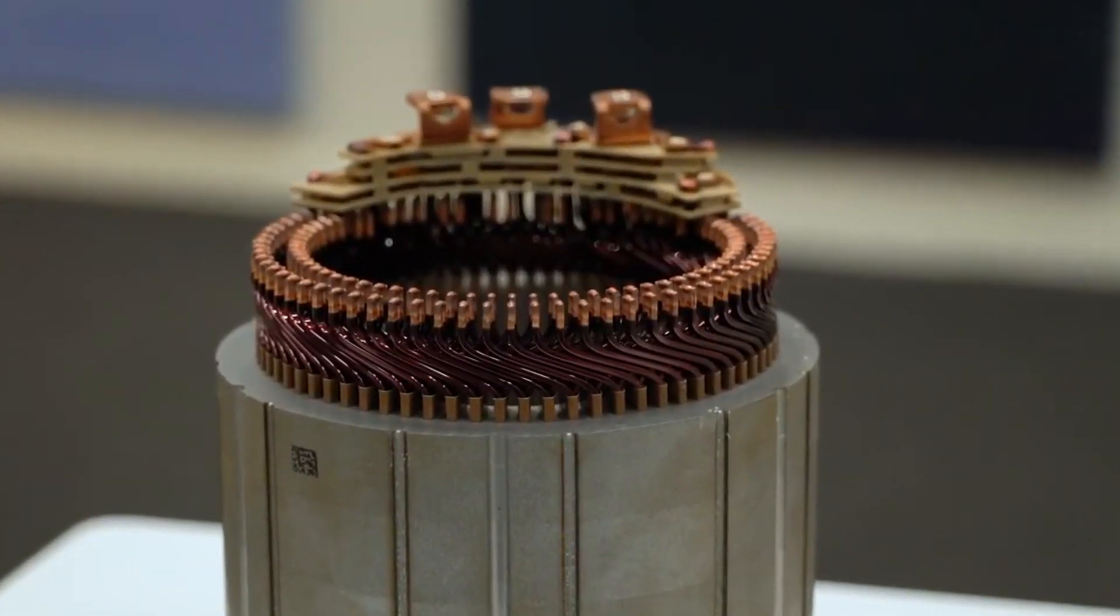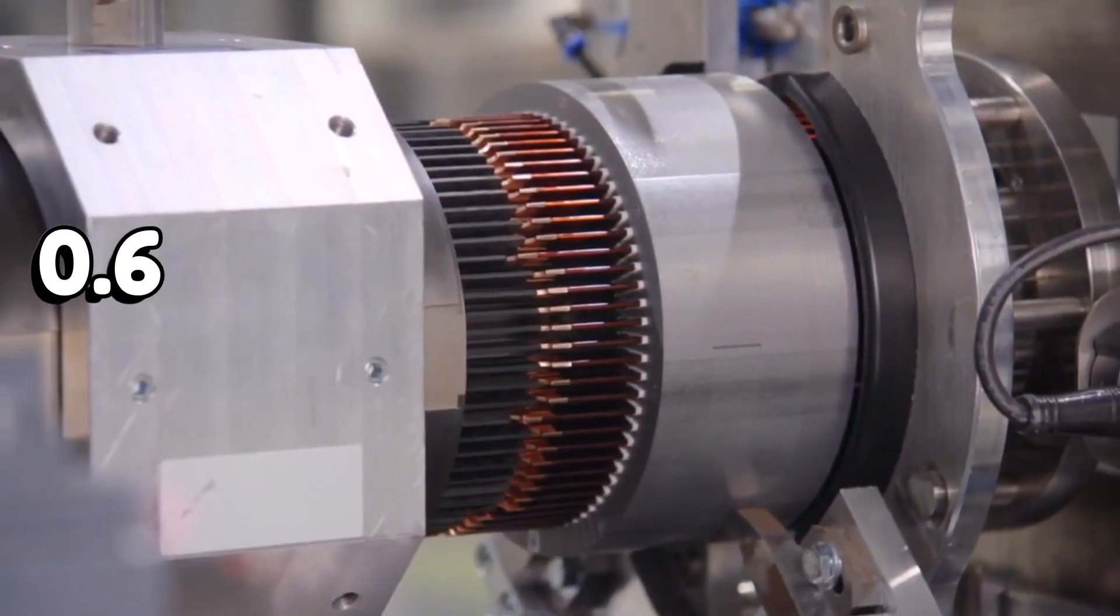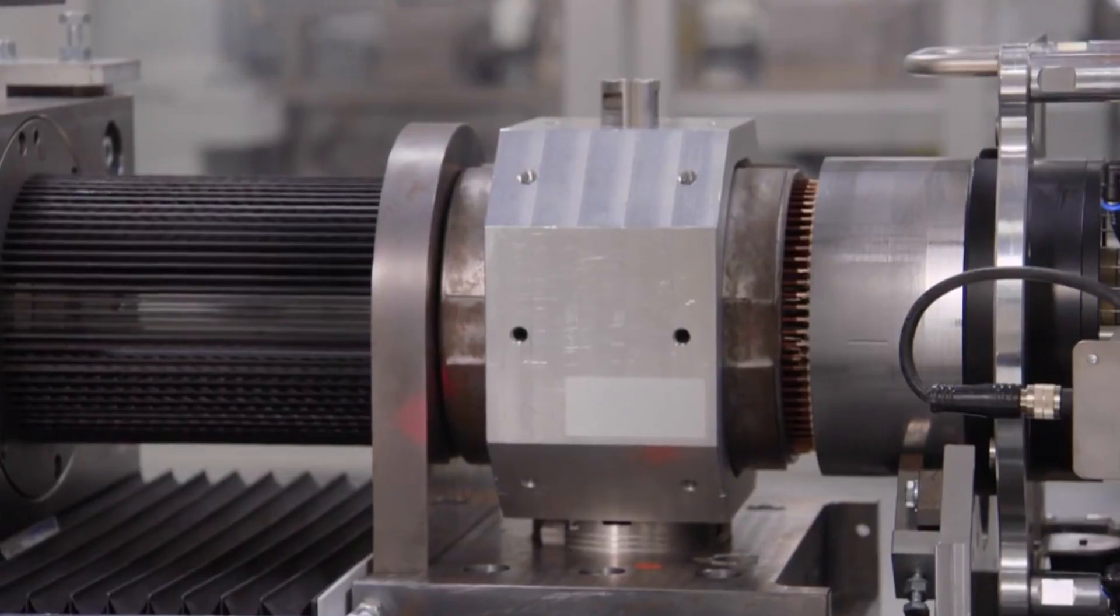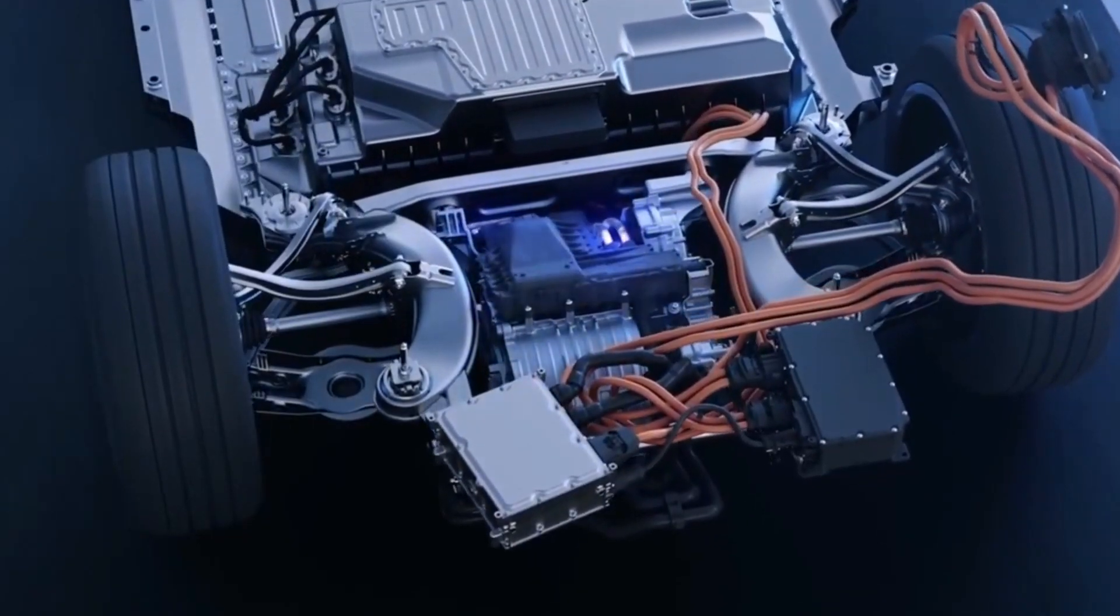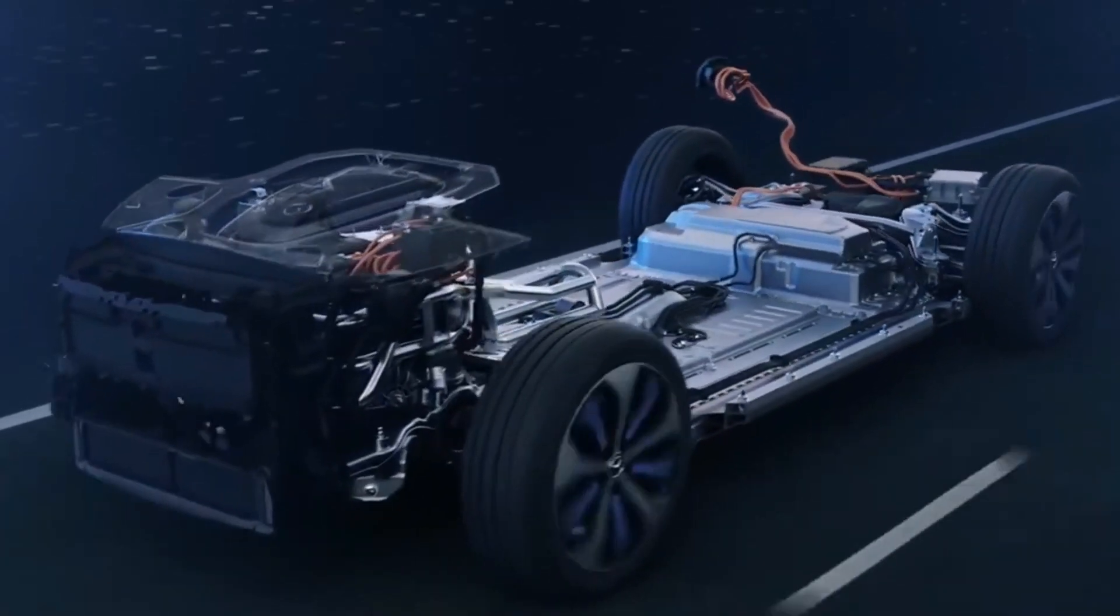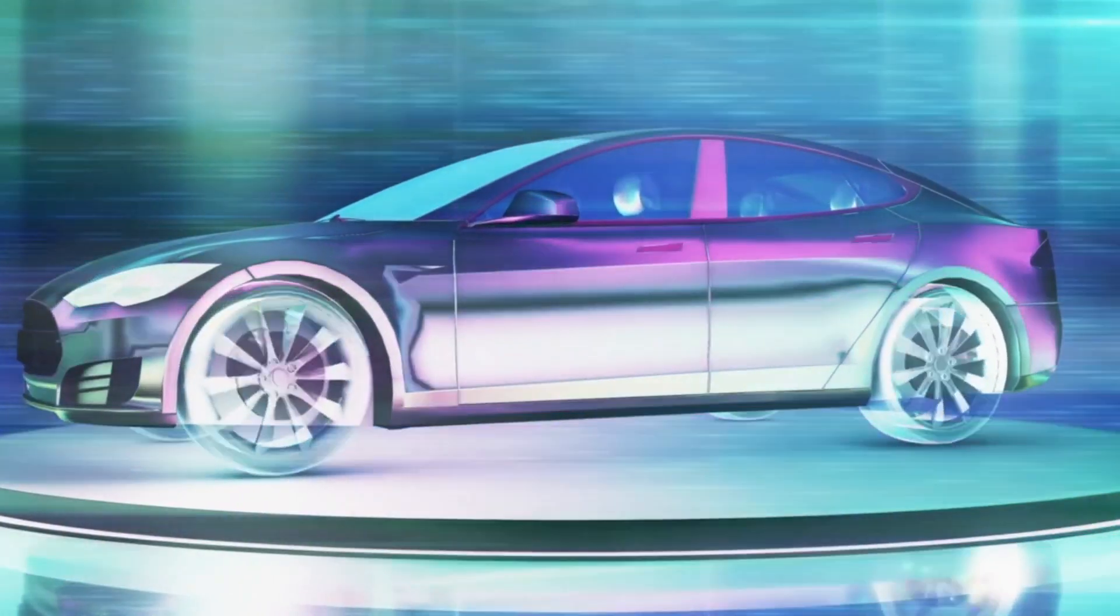Hairpin motors have a higher fill factor of up to 0.7 compared to the 0.4 to 0.6 fill factor of conventional round wires. This results in increased torque, higher power density, lower copper losses, and reduced noise, making them more efficient, reliable, and low maintenance.